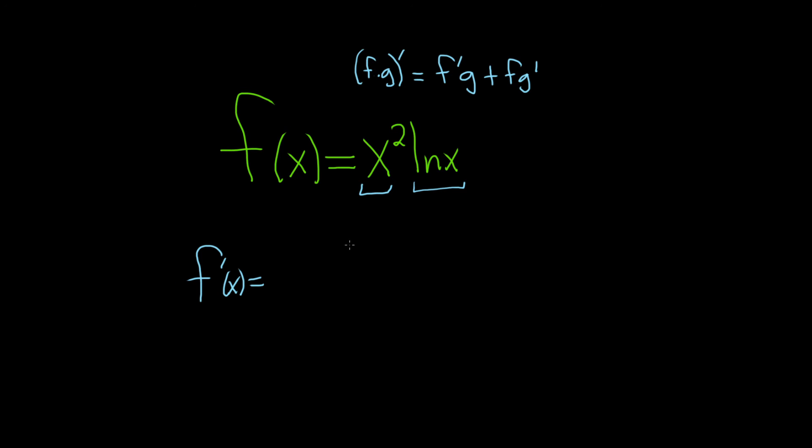it's the derivative of the first, so that would be 2x by the power rule, times the second, plus the first function times the derivative of the second, which is 1 over x.